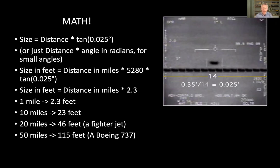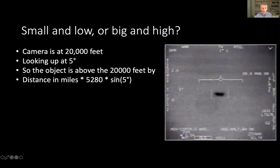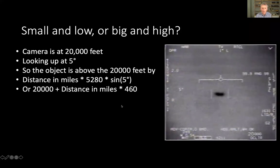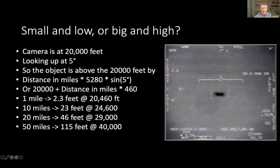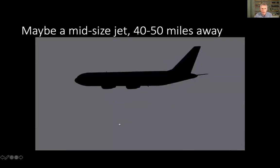As well as being small or far away, is it small and low, or is it big and high? We've got another number here, which is this 5 degrees here, which is the angle that the camera is looking up at. And if we're looking up into the sky, there's only so high a plane could be. A plane is not going to be at 100,000 feet, so it gives us some more limits as to what we can actually calculate. If we know the camera's at 20,000 feet, we have that number down here. And we know we're looking up at 5 degrees. So the object is above the 20,000 feet by some math again, distance in miles times 5,280 times sine of 5 degrees, or 20,000 plus the distance in miles times 460. Nice round estimate. So again, we can figure out the various things that it could be. So all quite reasonable numbers, less than 40,000 feet, which is like the service ceiling for some aircraft, but some aircraft can go high.